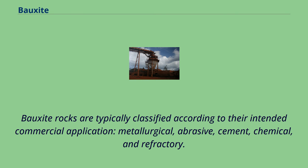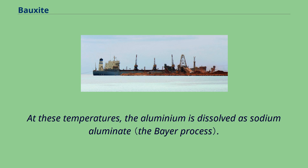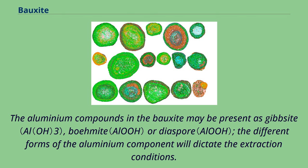Bauxite rocks are typically classified according to their intended commercial application: metallurgical, abrasive, cement, chemical, and refractory. Usually, bauxite ore is heated in a pressure vessel along with a sodium hydroxide solution at a temperature of 150 to 200 degrees Celsius. At these temperatures, the aluminium is dissolved as sodium aluminate. The aluminium compounds in the bauxite may be present as gibbsite, boehmite, or diaspore, and the different forms of the aluminium component will dictate the extraction conditions.